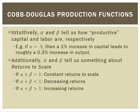Essentially, if alpha plus beta add up to 1, we're talking about a production process with constant returns to scale. If alpha plus beta is less than 1, we've got decreasing returns. And if they add up to more than 1, then we're dealing with increasing returns.